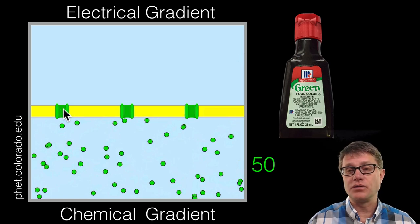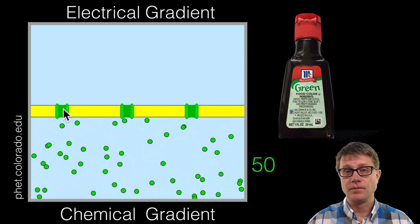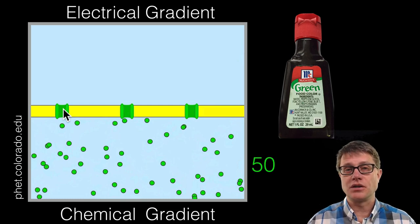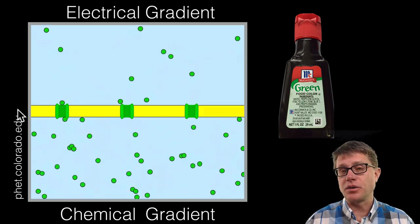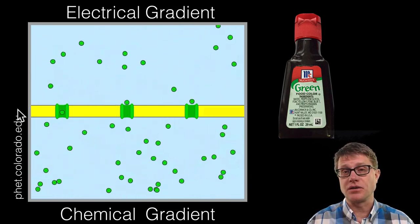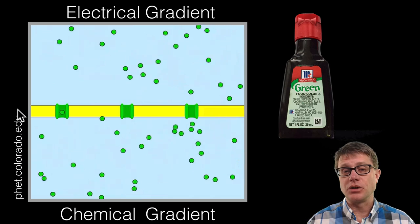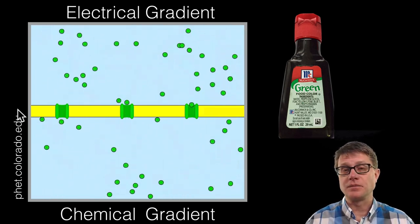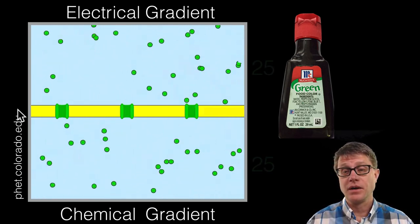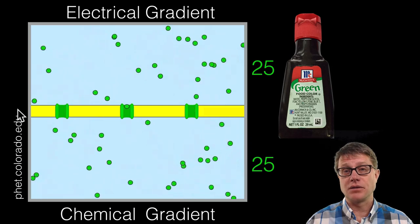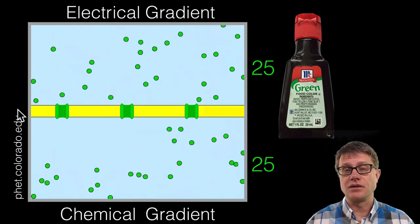These channels allow that green food coloring to move through. So you should make a prediction of what you think is going to happen on this simulation if we let it go. So let us watch what happens. And you probably got this right. So those molecules have a certain amount of kinetic energy. This random Brownian motion is going to move them up from the bottom to the top and from the top to the bottom. So we started with 50 and 0. Now we have roughly 25 on either side.